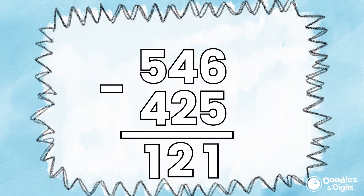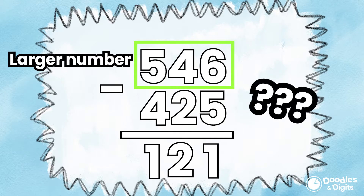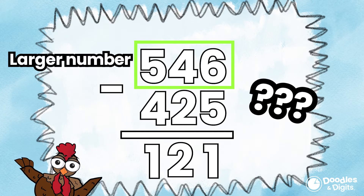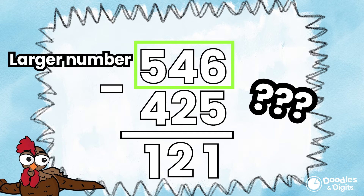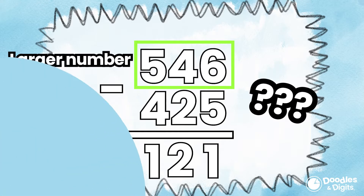Make sure you put the larger number on the top. Why do you think that is? If we subtract the larger number from the smaller number, we'll end up with a negative number. We also need the larger number on top to make it easier for us to borrow — more on that later.